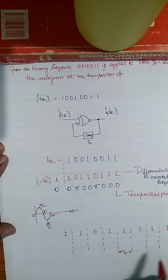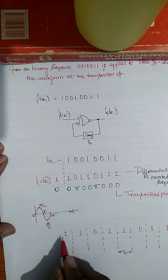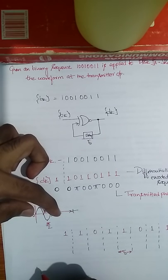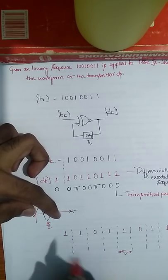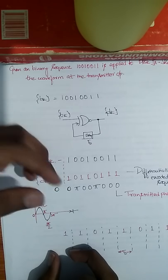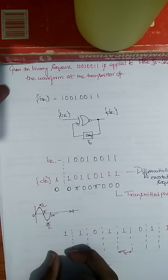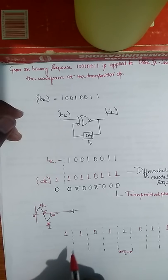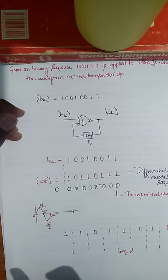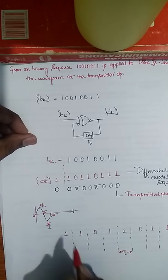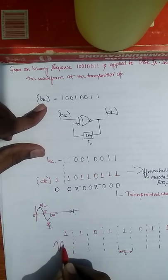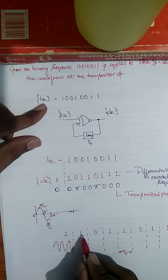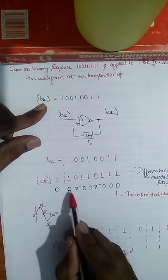For each bit I will consider 3 cycles within one bit period TB — you can use 2 or 4 cycles, but let's follow uniformity with 3. For bit 1, I transmit the original carrier with zero phase shift, so 3 cycles of the original signal are drawn. From bit 1 to bit 1 again there is no phase shift, so the same signal continues — again 3 cycles.